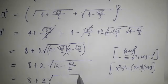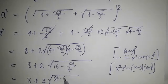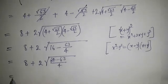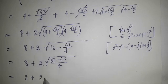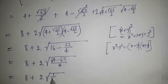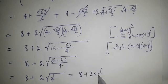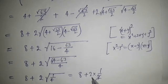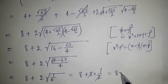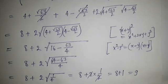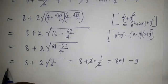And it is 8 plus 2. That is 64 minus 63 divided by 4. I am taking positive value, so 8 plus 2, and square root of 1 divided by 4. That is 1 by 2. So 8 plus 1, that is coming to 9.